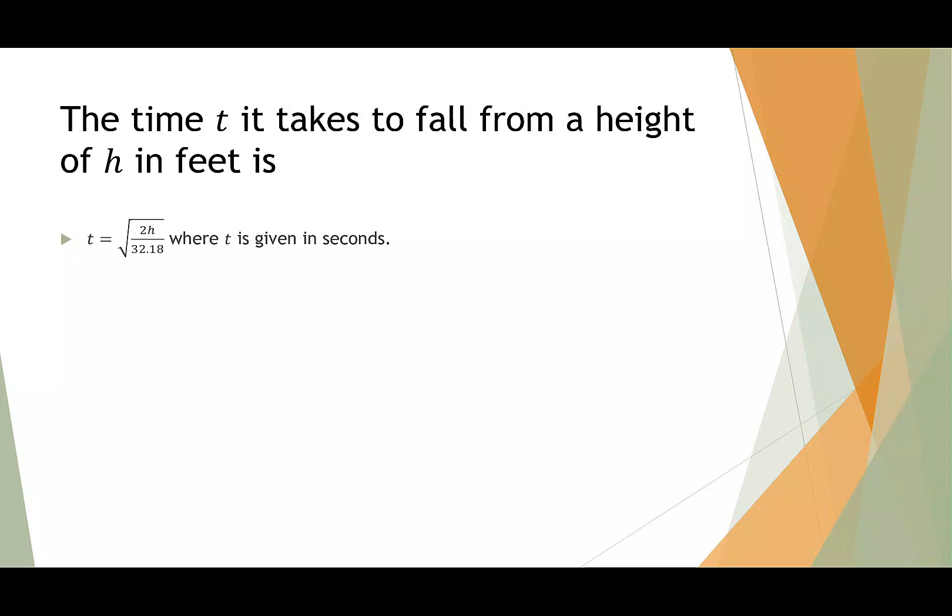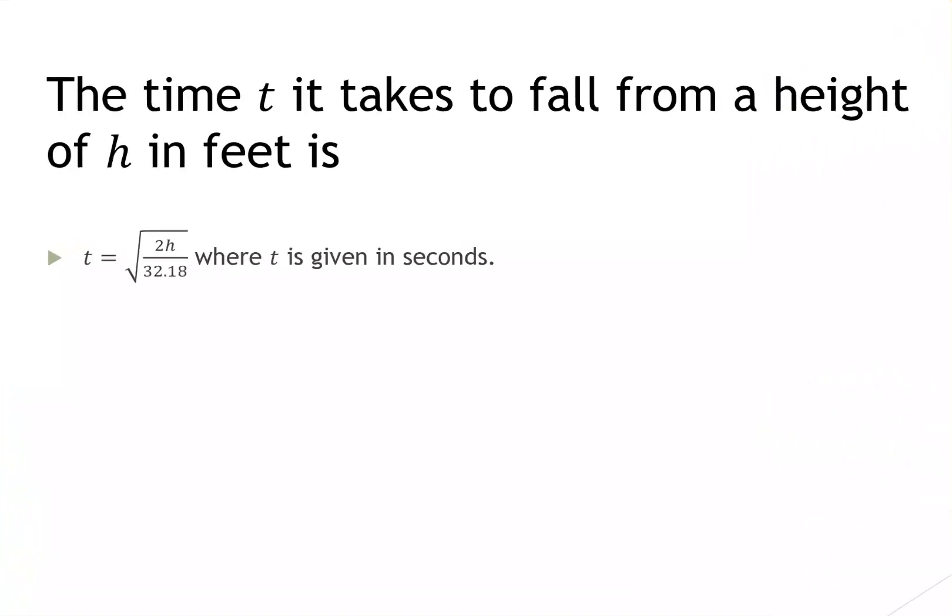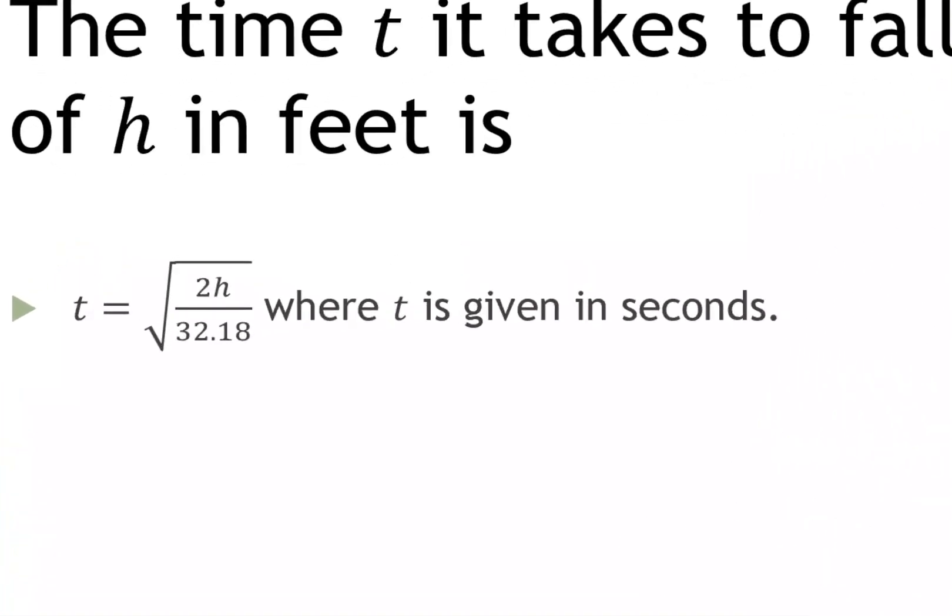The time t it takes to fall from a height of h in feet is t equals the square root of 2h over 32.18, where t is given in seconds. The 32.18 on the bottom is the acceleration due to gravity.